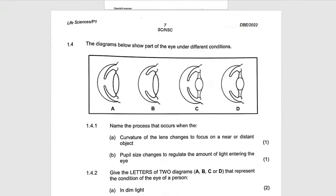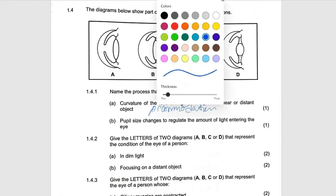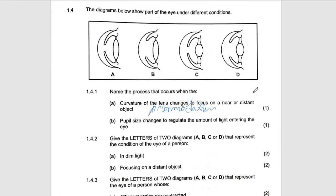Now let's start to answer the question. 'Name the process that occurs when the curvature of the lens changes to focus a near or a distant object.' We call that accommodation. So the answer here is going to be accommodation.